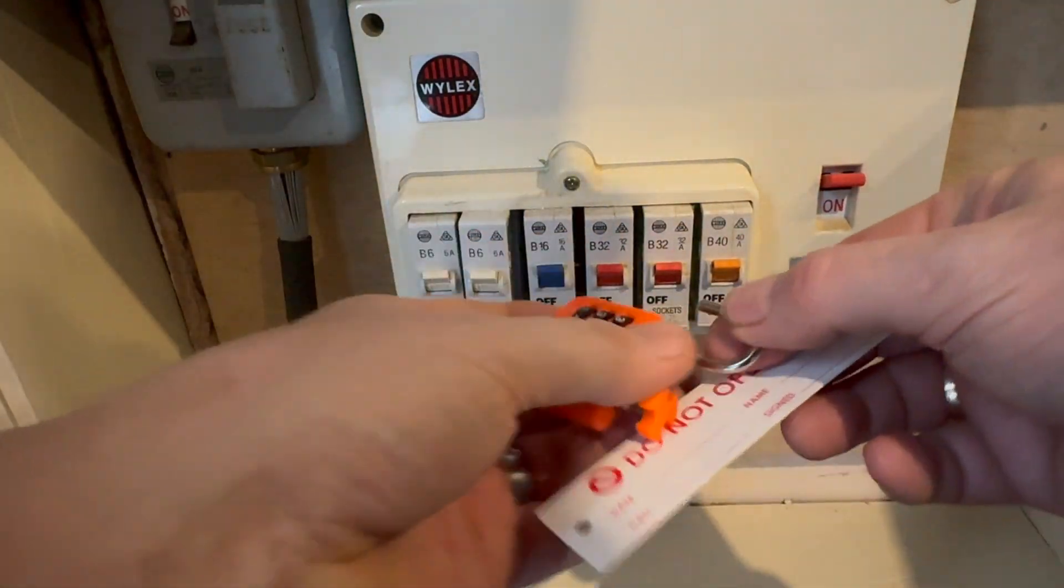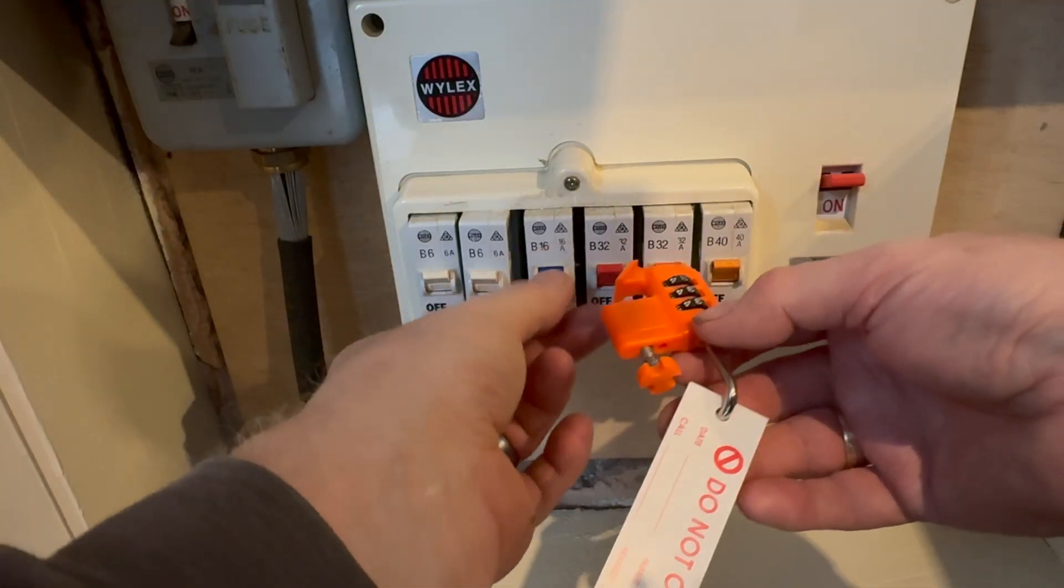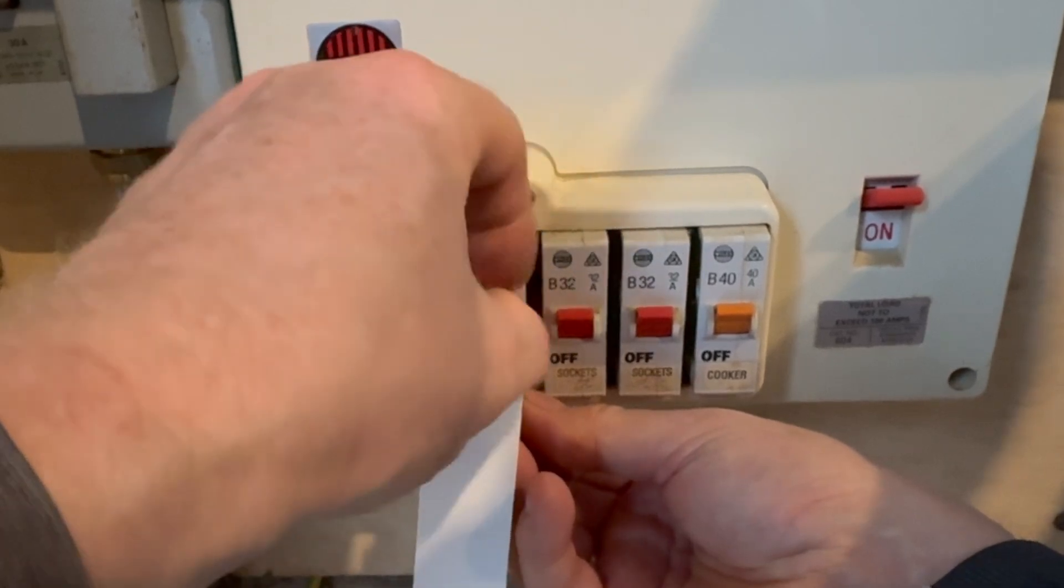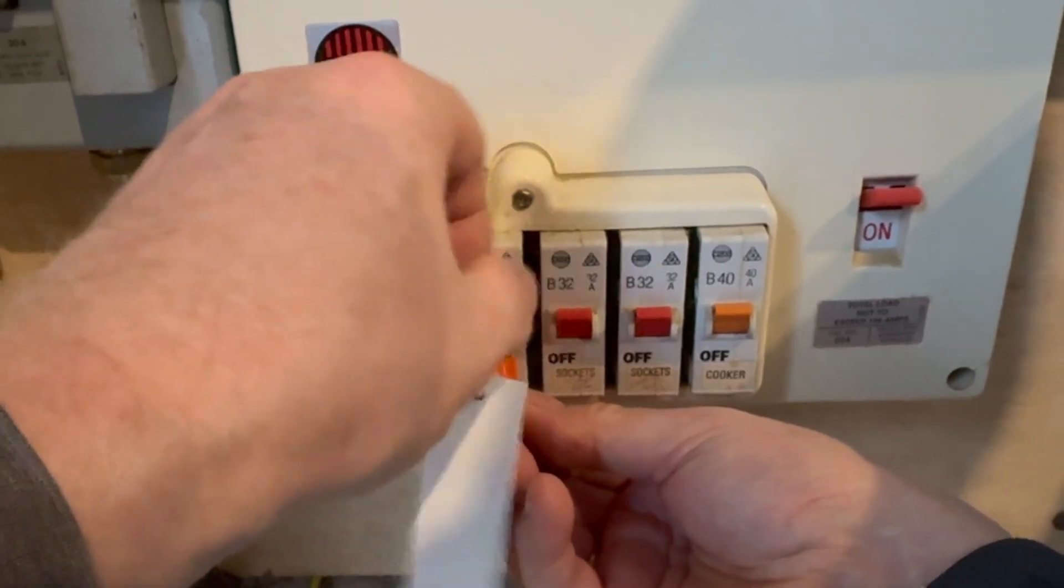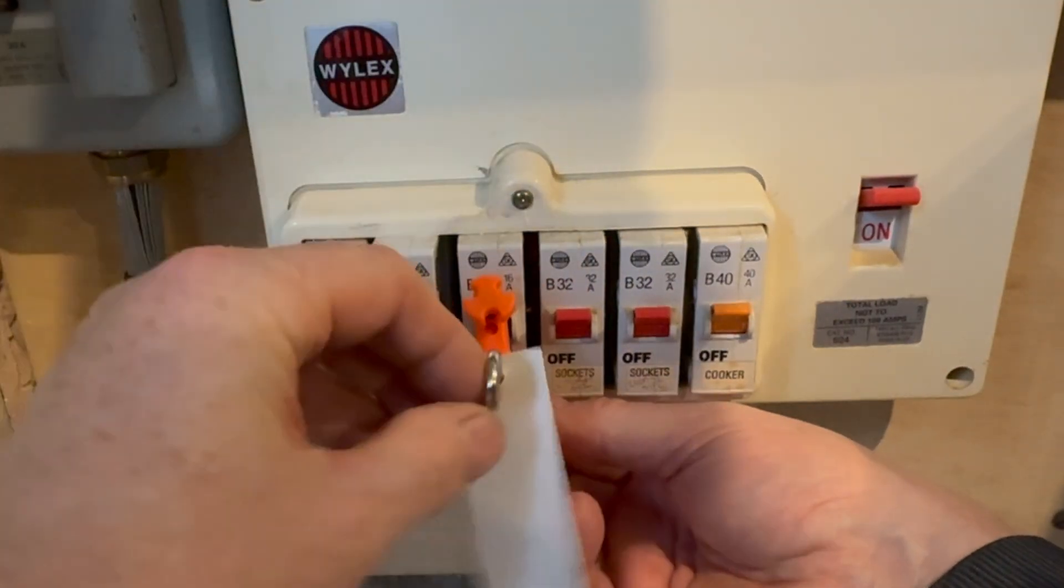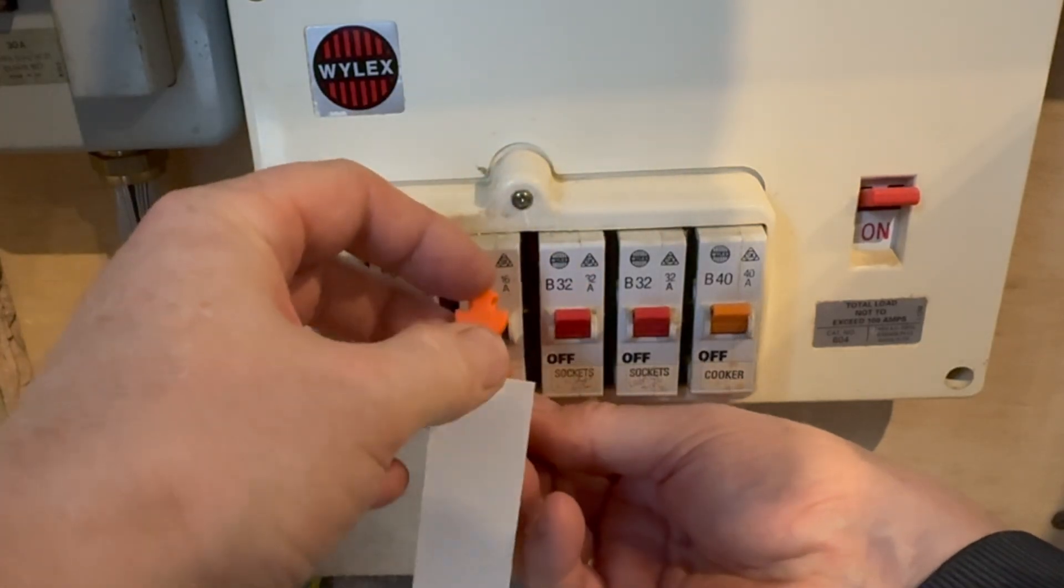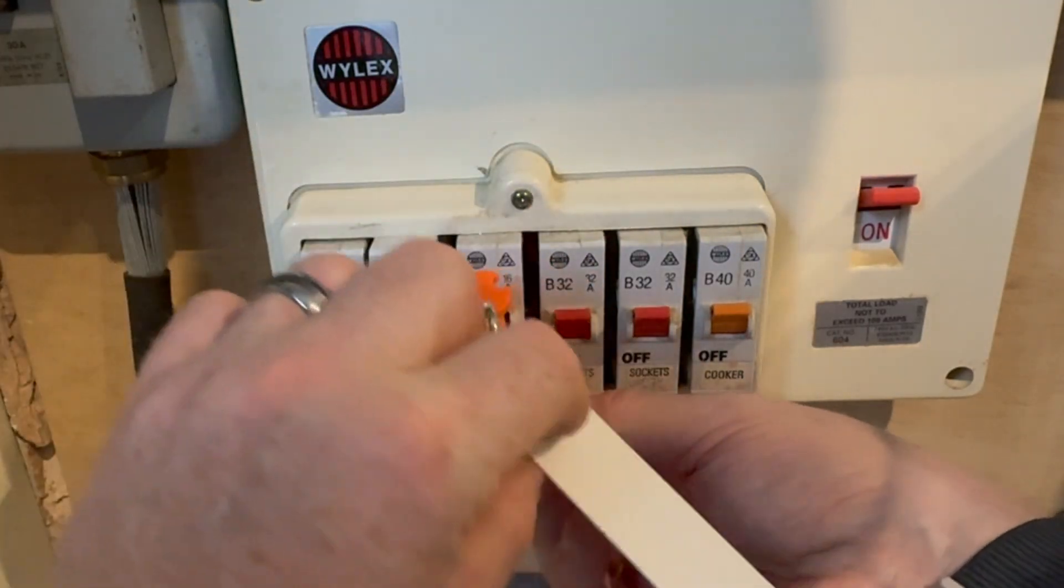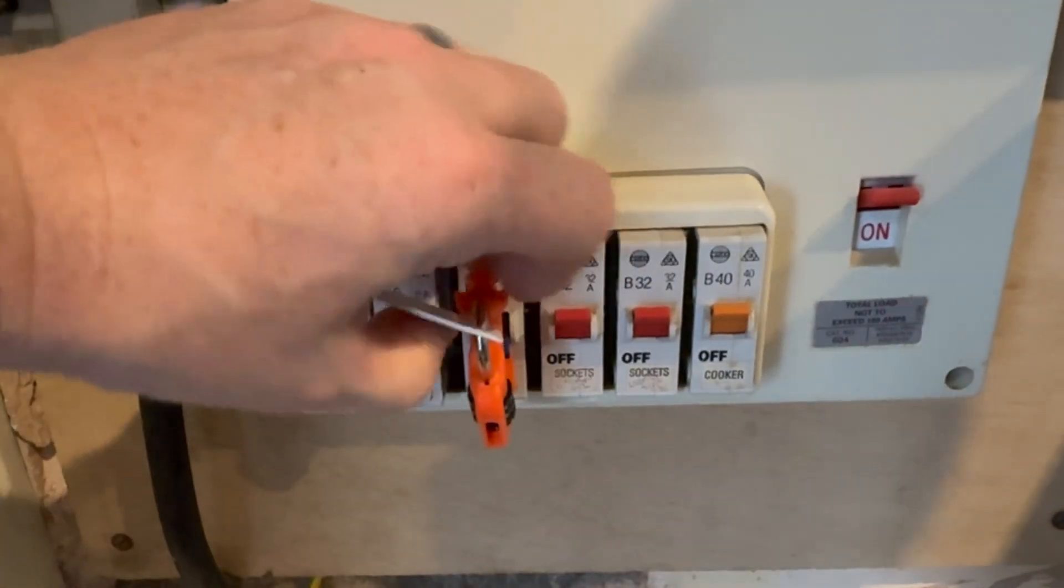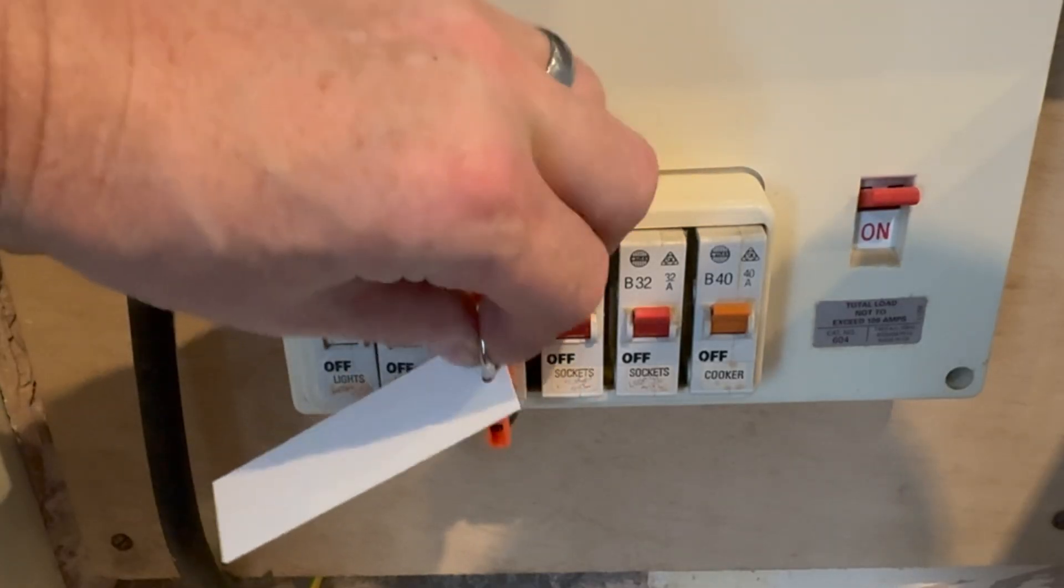We can put the sign through there. Turn off the MCB. You screw that down like that. Make sure this is in line. Turn it in line. Press that down. Move the numbers. And this now cannot be turned or removed.